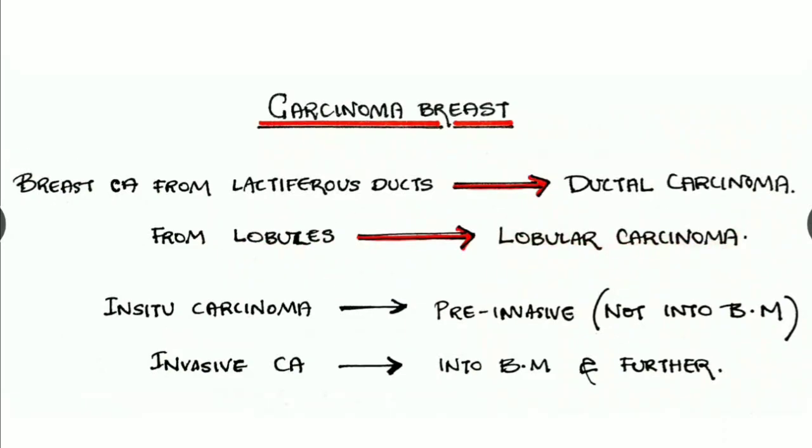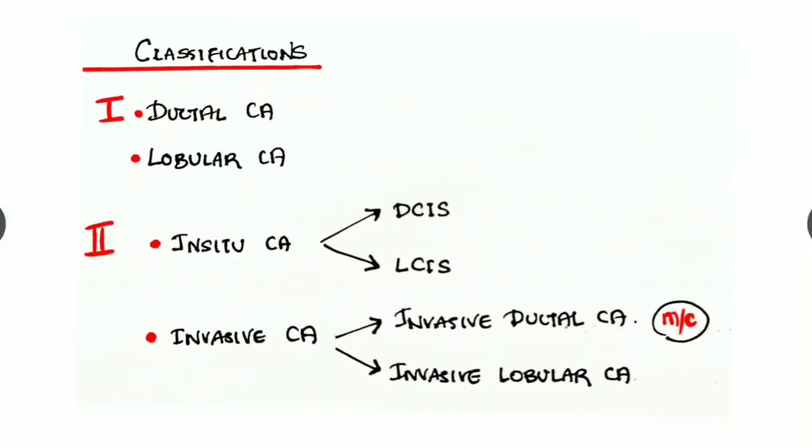Another type is in situ carcinoma where the lesion is pre-invasive, which means it doesn't spread to the basement membrane. Next is invasive carcinoma where it spreads into the basement membrane and further.